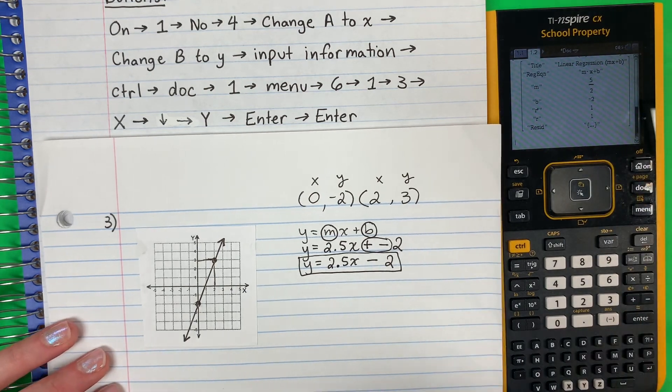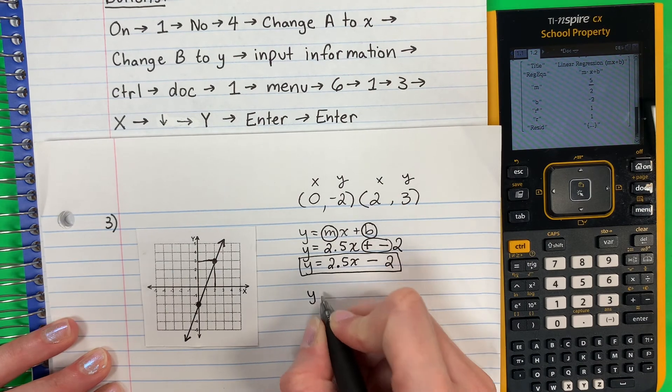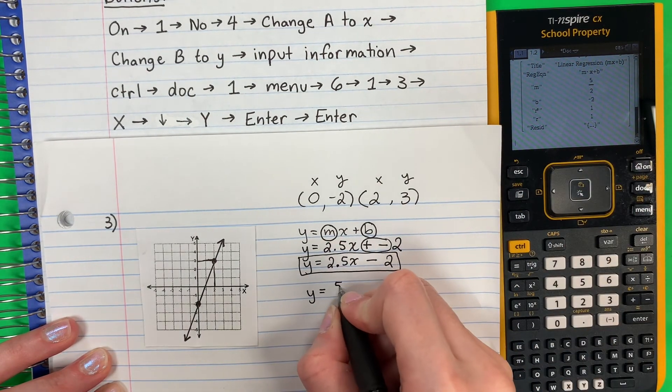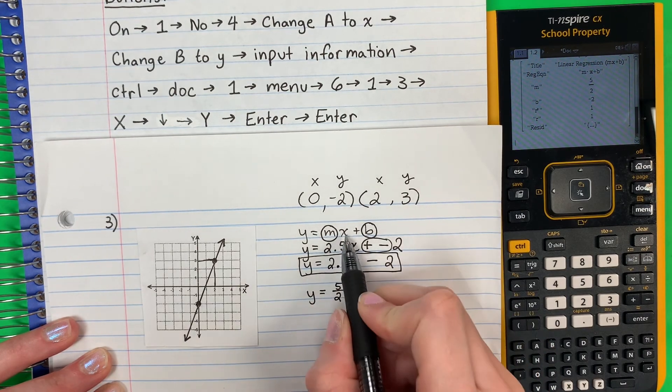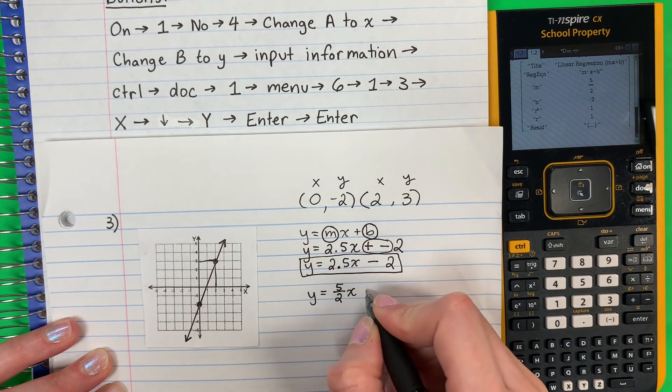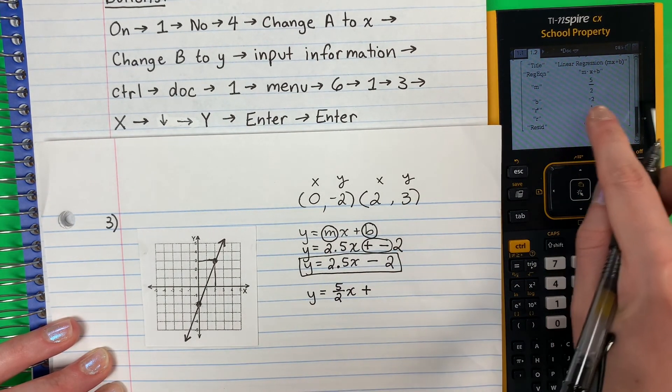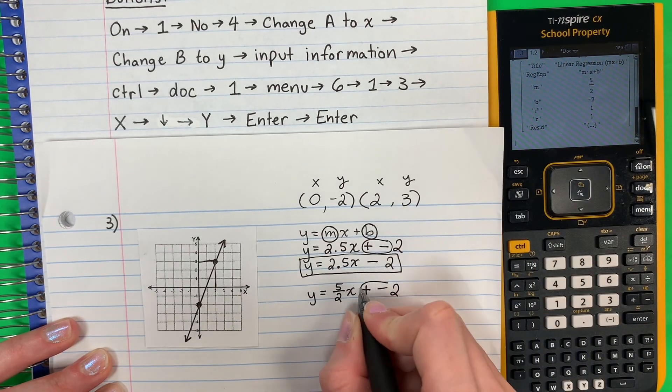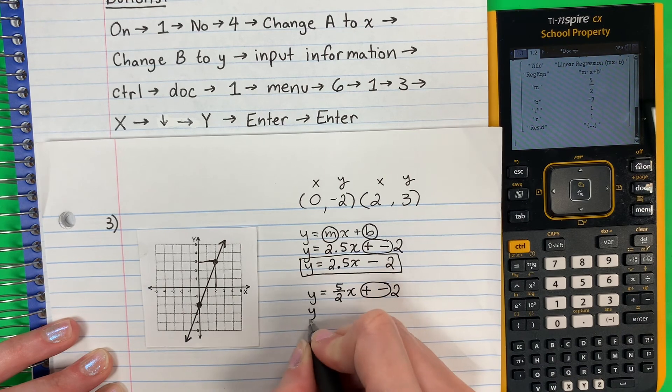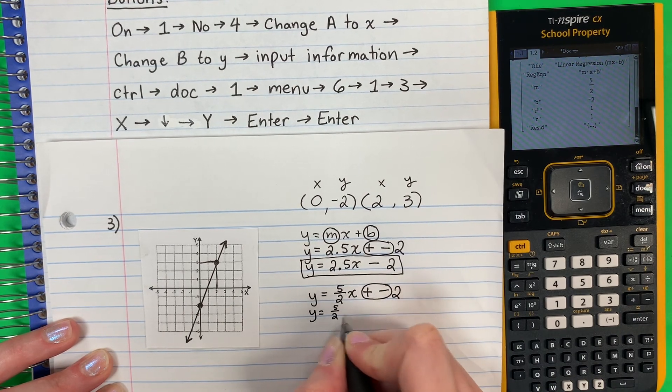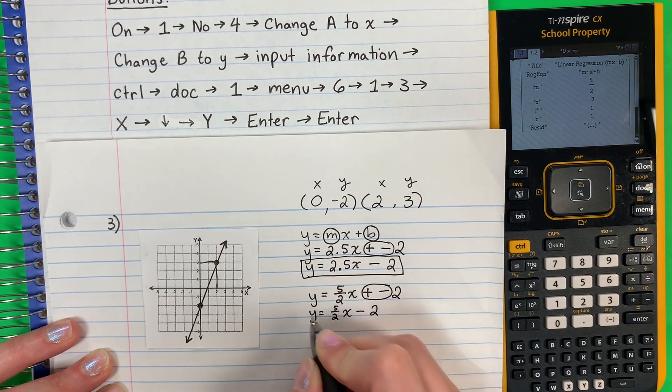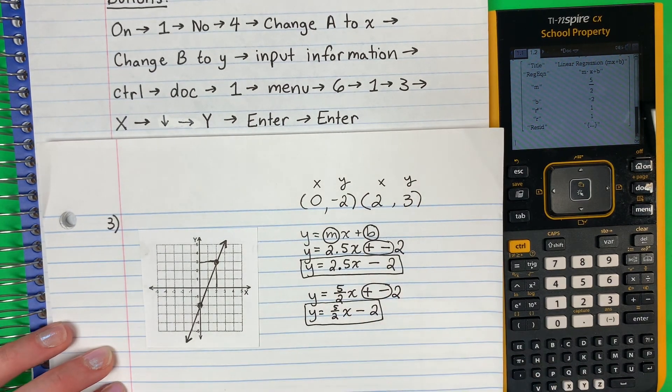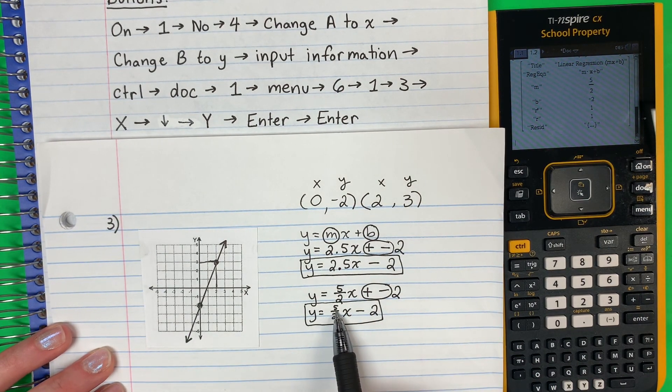So again, I'm going to do Y equals. My M. Mi M is 5 halves. Cinco medios. Copy X. Copy plus. B is negative 2. B negative 2. And then again, plus, minus is minus. So Y equals 5 halves X minus 2. So this is your answer as a fraction with the line. Esta es la respuesta como fracción con la línea.